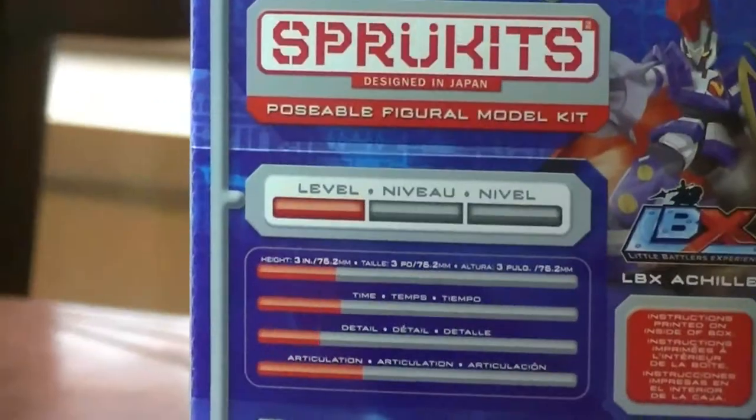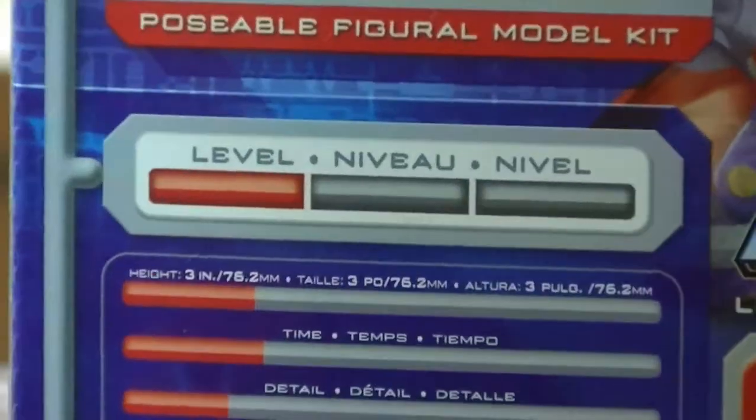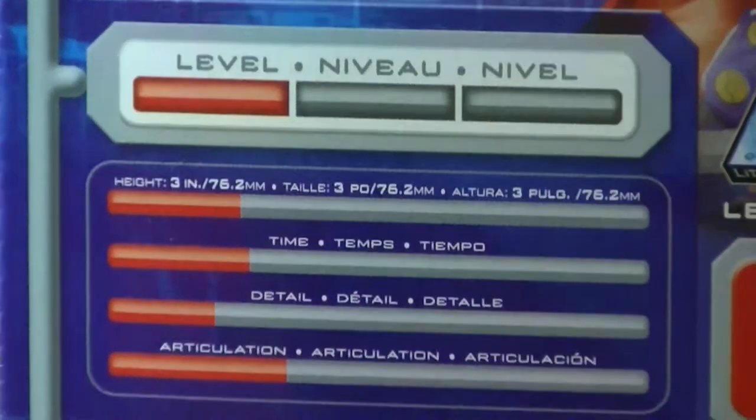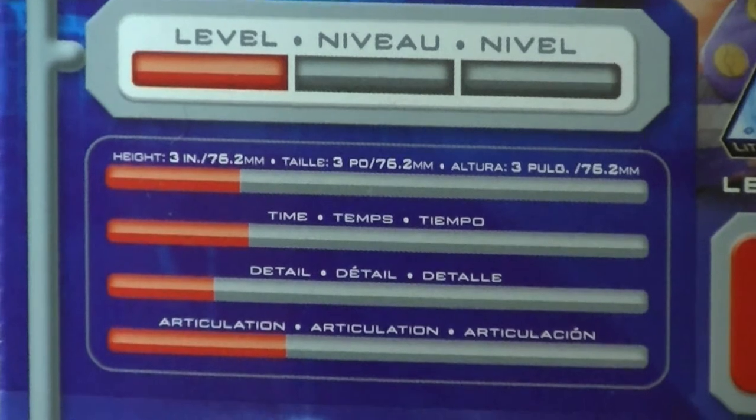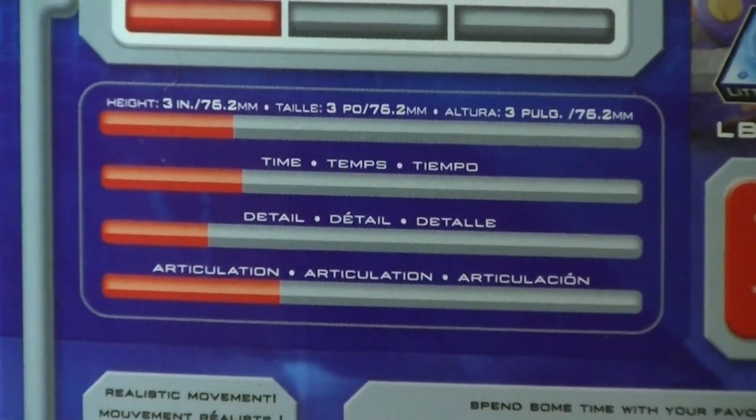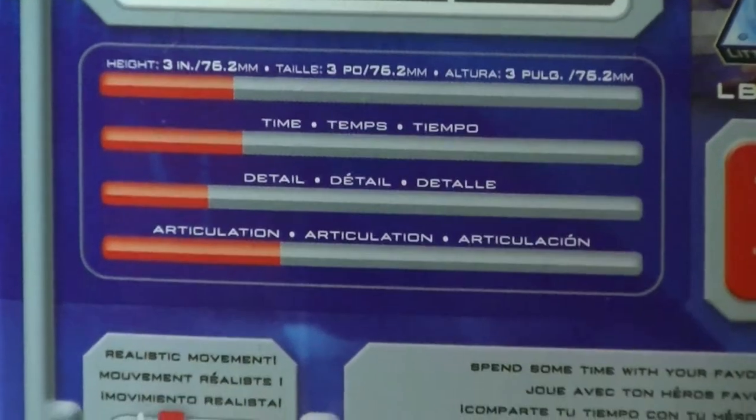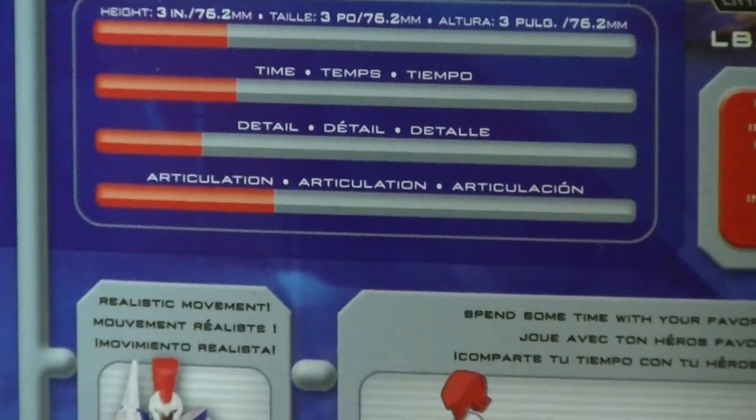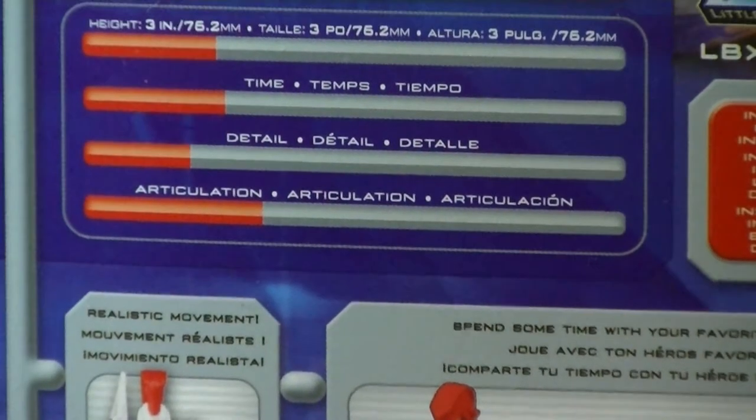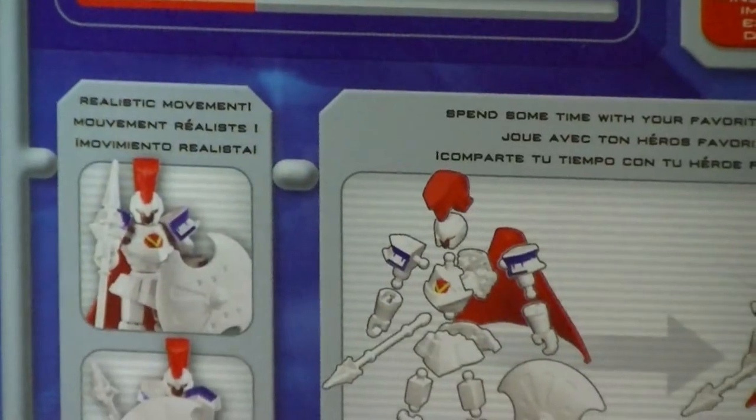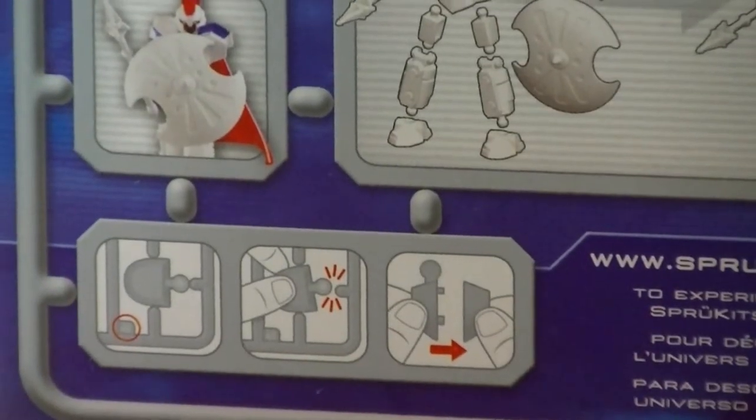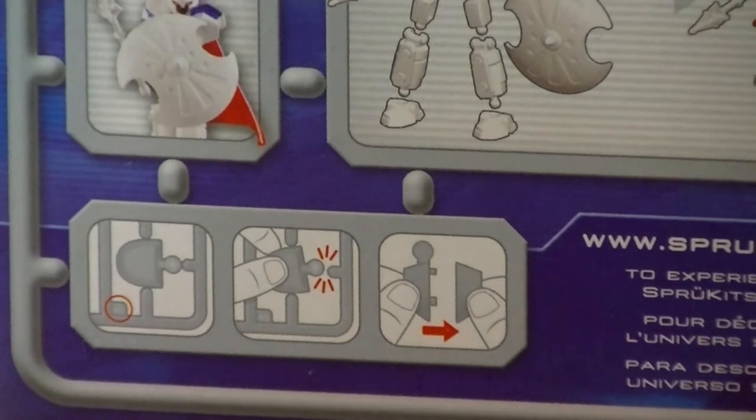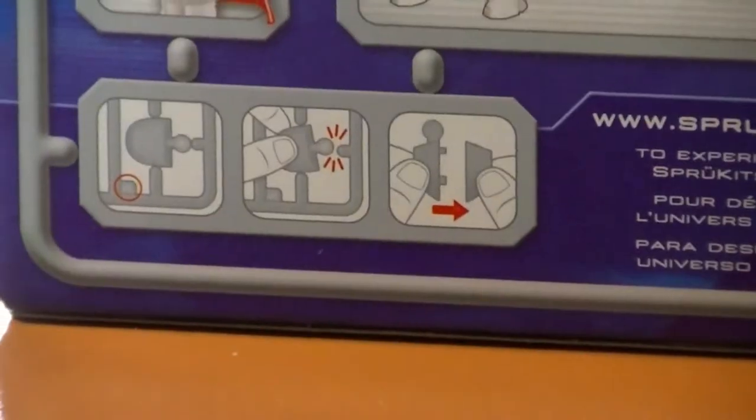Before we open this thing up, let's take one last look at the packaging. It says the level of dedication you need to build it, the height once built, 3 inches, how much time, which there's no context for that bar, the level of detail, and the level of articulation. You also scroll down, you see what the figure will look like when completed, and a quick graphical instruction on how the thing comes apart. Take the things and snap them together. Very simple.